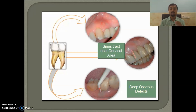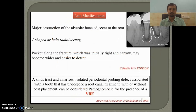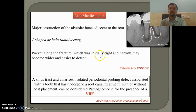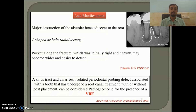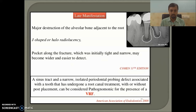In periodontitis, pocket formation is generalized, but in VRF it is localized. As the lesion progresses, you can see loss of alveolar bone, J-shaped radiolucency, halo radiolucency, or in some cases a separated root. The pockets that were initially tight and narrow become wider over time. The American Association of Endodontists states that a sinus tract and narrow isolated periodontal probing defect associated with a tooth that has undergone endodontic therapy, with or without post placement, can be considered pathognomonic for VRF.